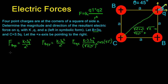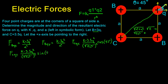Now for the y direction of C on Q: it's the same expression, except instead of cosine we use sine, because it's going in the y direction. So: K times 3.5Q squared divided by the square root of 2A squared — that quantity squared — times sine 45 degrees.